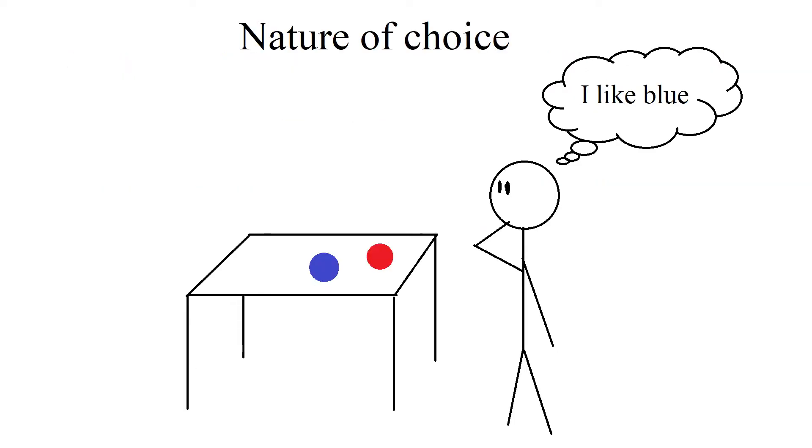First, let's look at the nature of choice. Out of the possible options, you choose the most desirable option, based on information available to you at that time.